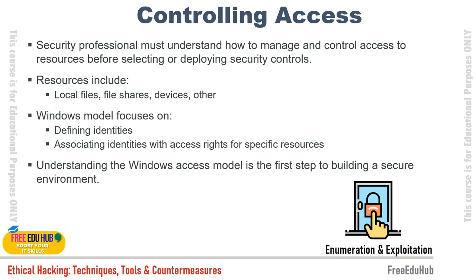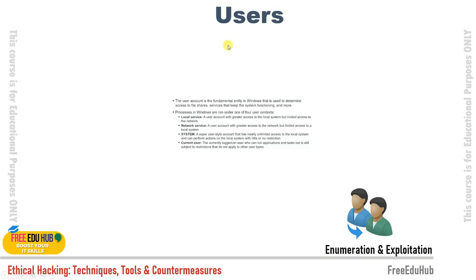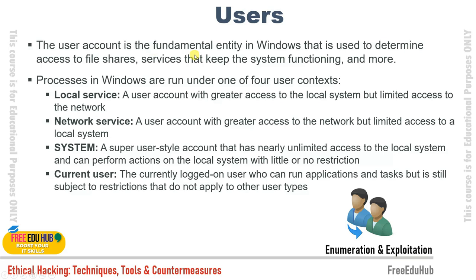The Windows model focuses on defining user identities and associating those identities with access rights for specific resources — who must have access, to whom it should appear, when it should be available. This is also called access-based enumeration. Understanding the Windows access model is the first step in building a secure environment.